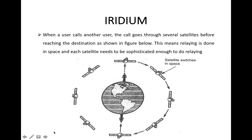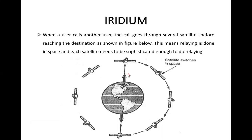When user one wants to call user two, the call will be connected to the nearest satellite, then relayed using different satellites up to the destination point. There is no involvement of base stations at all — the network is totally wireless.